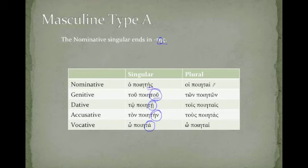And then in the plural, hoi poiētai, tōn poiētōn, tois poiētais, tous poiētas. Notice again, just like with all other first declension nouns, the plural endings are the same.